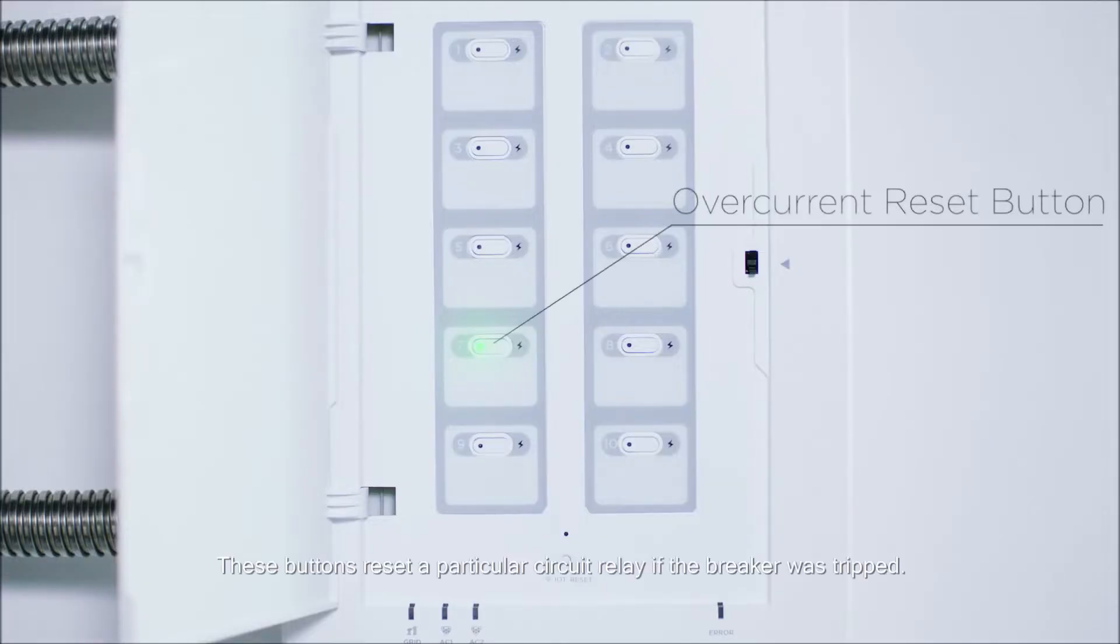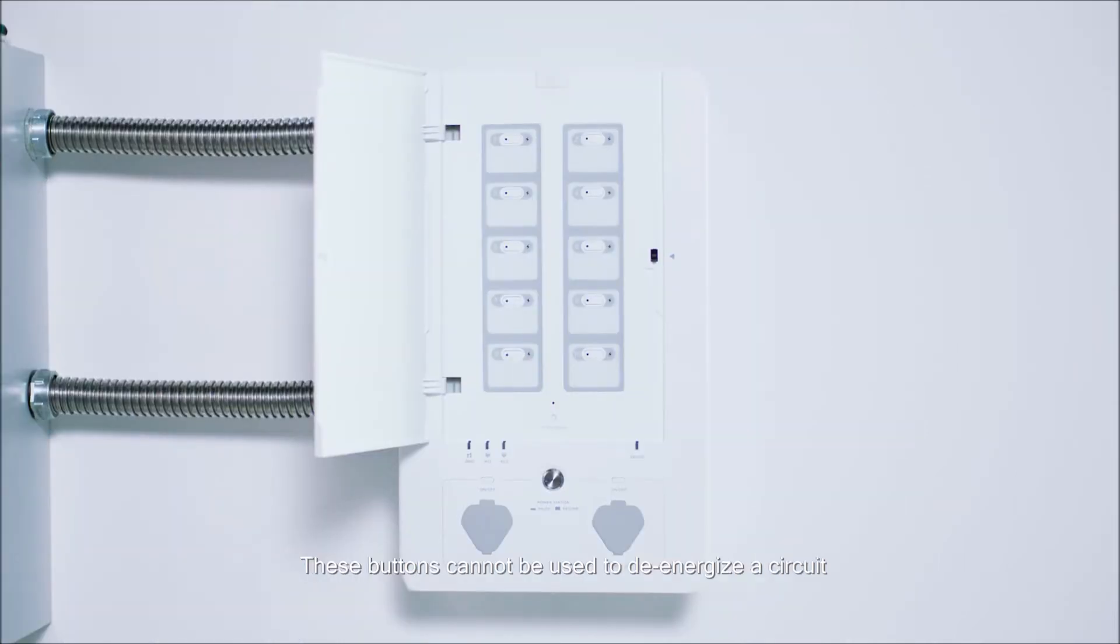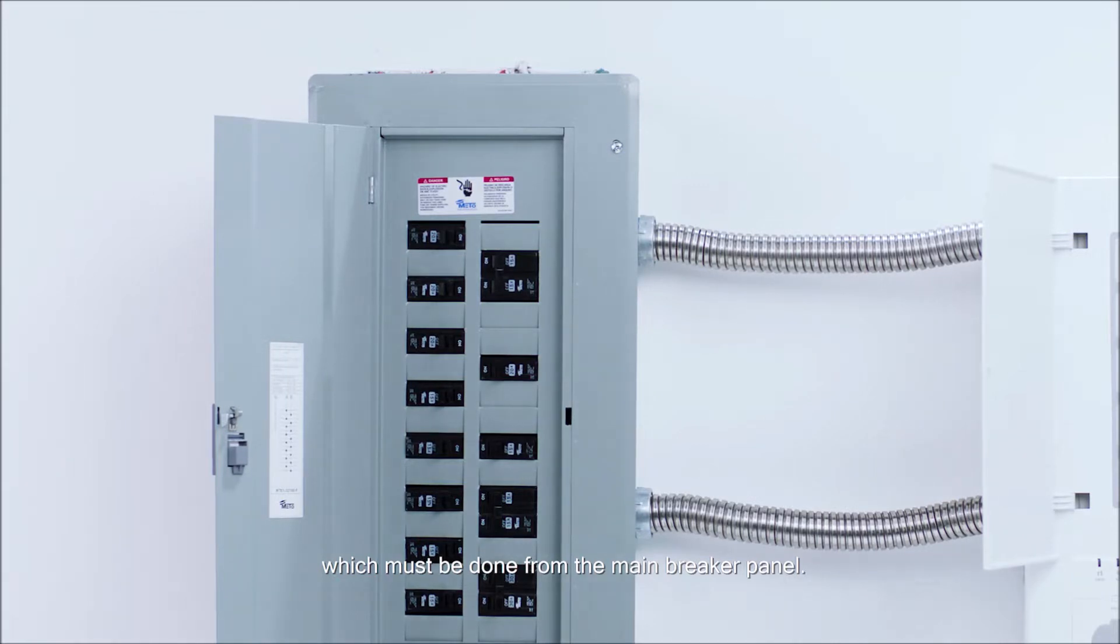These buttons reset a particular circuit relay if the breaker was tripped. A red indicator light means that there has been a fault in that circuit. These buttons cannot be used to de-energize a circuit, which must be done from the main breaker panel.